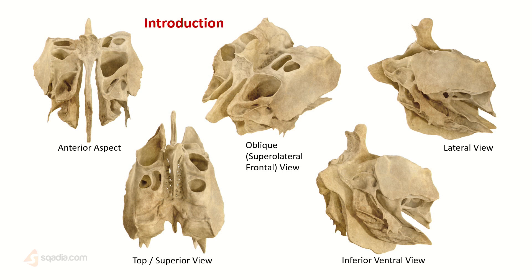The ethmoid bone, to me, looks like a walnut out of its shell. It is an irregularly shaped bone that mainly forms the nasal septum and the bony lattice that forms the internal structure right behind the upper part of the face.